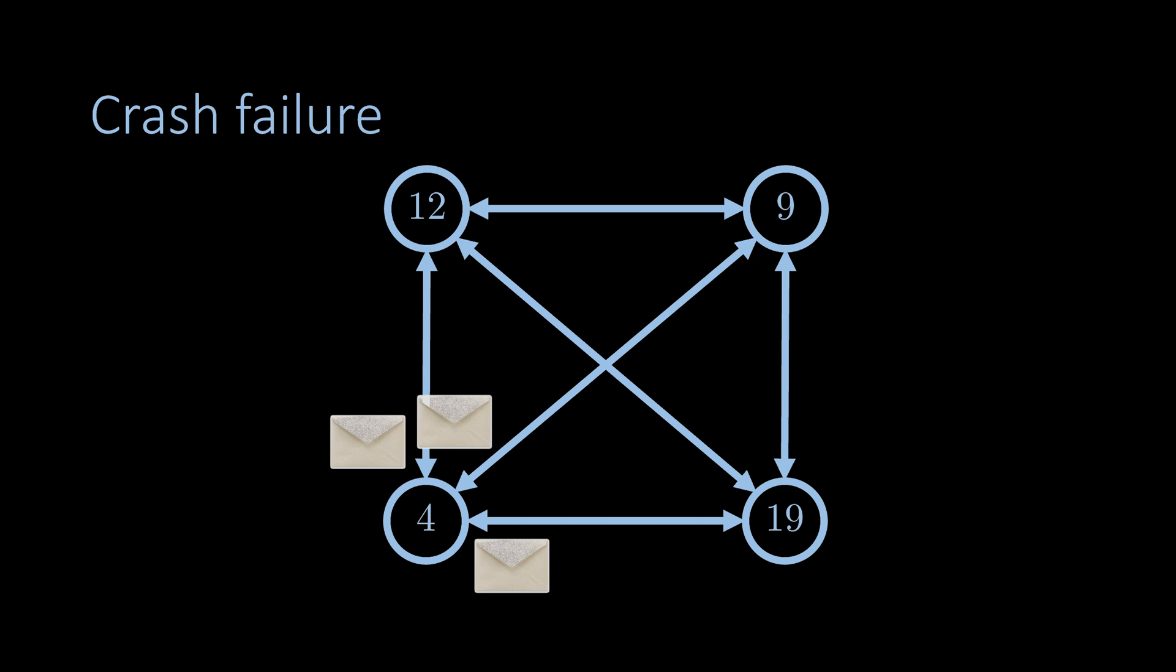Once a node has crashed, it will never perform any actions anymore, that is, it will remain in the crashed state, and the remaining nodes need to reach agreement among themselves.